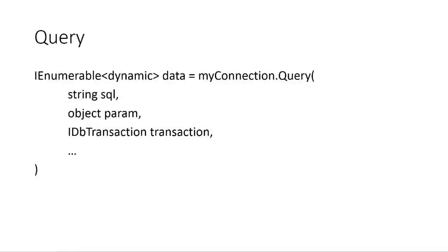Let's move on to Query — this is where it gets more interesting. There are two query extension methods: Query with no type parameter, and Query<T> with a type parameter. Query returns a collection of dynamic objects, one for each row. This is a key point with Dapper — it returns one object per row of your result set.